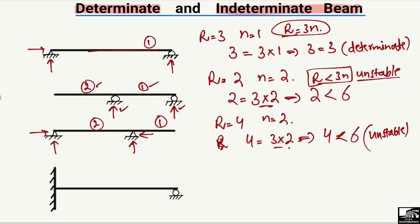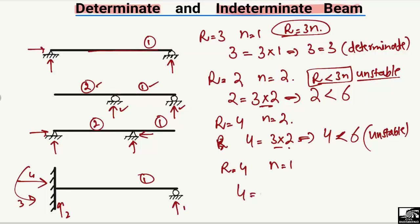In the last beam, there is a fixed support and a roller support. The fixed support takes vertical reaction, horizontal reaction, and moment — three reactions — and the roller support takes one vertical reaction, giving a total of four support reactions: r equals 4. There is only one member, so n equals 1. Applying the formula: 4 vs. 3 × 1 = 3. Since 4 is greater than 3, r is greater than 3n, so this is an indeterminate beam.